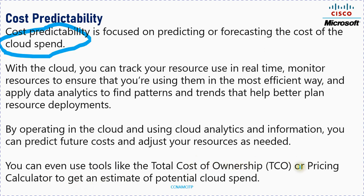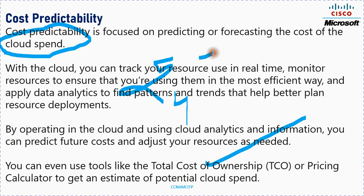You can also use tools like the Total Cost of Ownership calculator and the Pricing Calculator to estimate potential cloud spend. The Pricing Calculator helps you estimate the cost of a specific plan or configuration. The Total Cost of Ownership calculator helps you compare costs over multiple years — for example, what the cost has been over four or five years and what the next four years will cost. These tools help you do cost predictability.